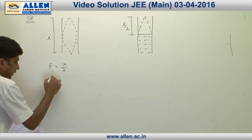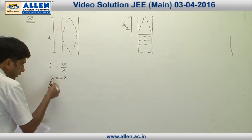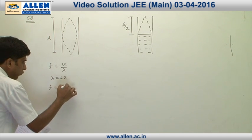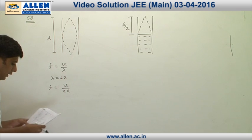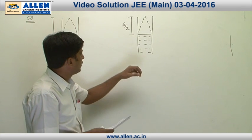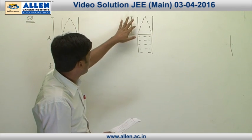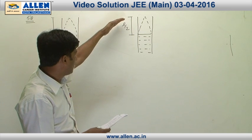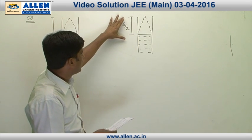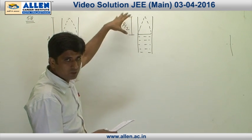That means the value of f is v by 12. In the second case, in which half of one loop is formed in the air as shown in the diagram, this length is l by 2.